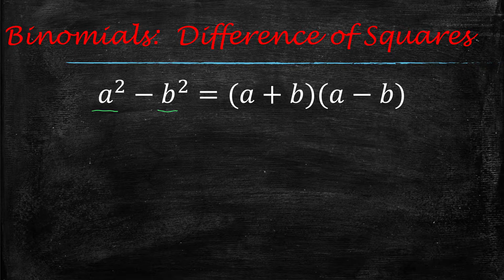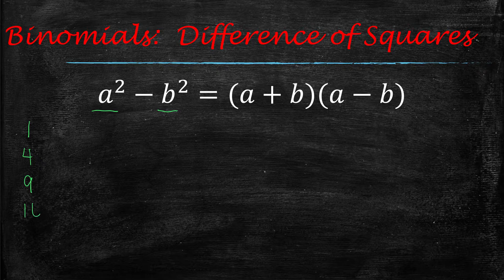When you see that, and when I'm talking about perfect squares, I'm talking about something that you can take the square root of. Some perfect squares are 1, 4, 9, 16, 25, and so on.